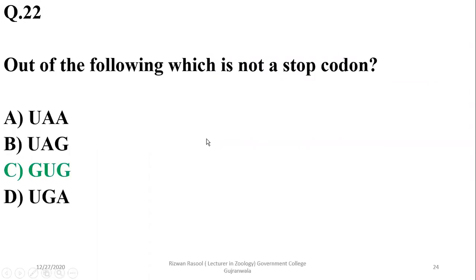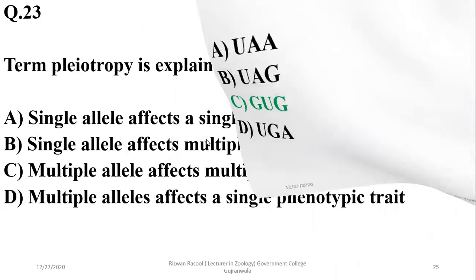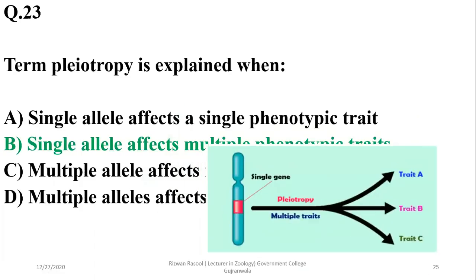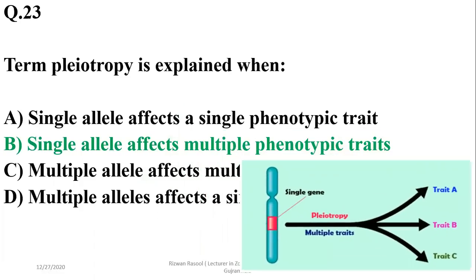Question 21: Which of the following is not a stop codon? GUG is not a stop codon — the other three options are stop codons. Question 22: The term pleiotropy describes when a single gene affects multiple phenotypic traits. Beta is the right option.